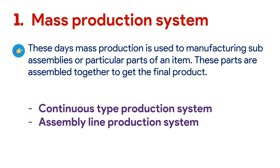There are two types of mass production system: continuous type production system and assembly line production system. Continuous type means the process goes on continuously with no breakage or pauses in between, whereas the assembly line production system works as already discussed.